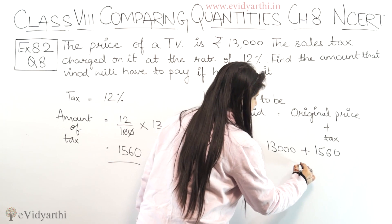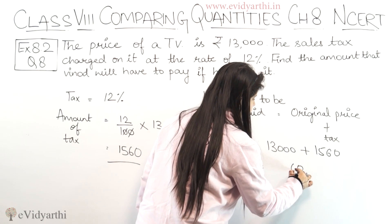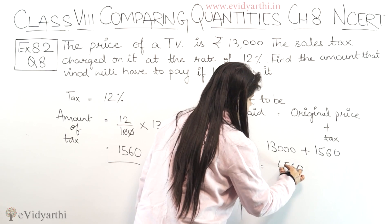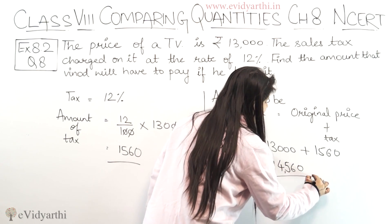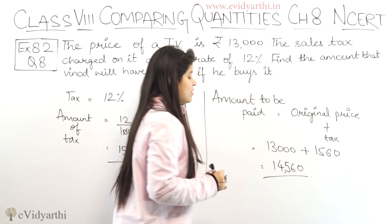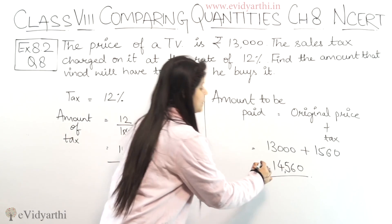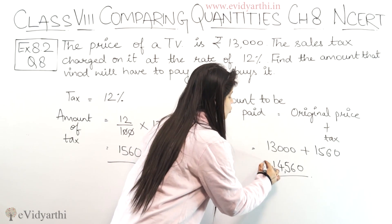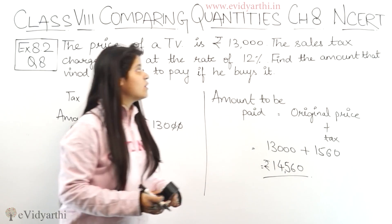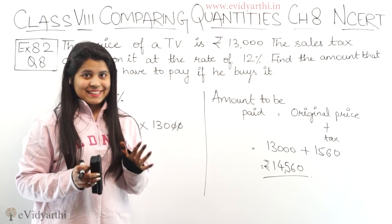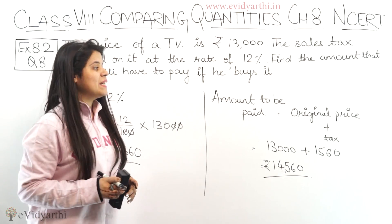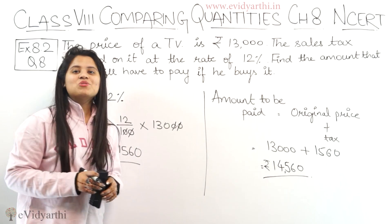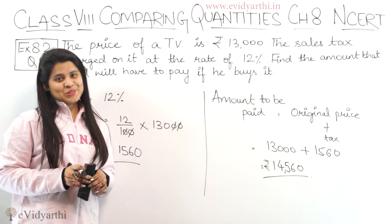Adding these together: 13,000 plus 1,560 equals 14,560 rupees. So Vinod will need to pay Rs. 14,560 if he purchases the TV. That was question number 8. Now let's come to the next question.